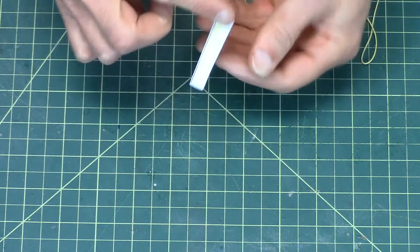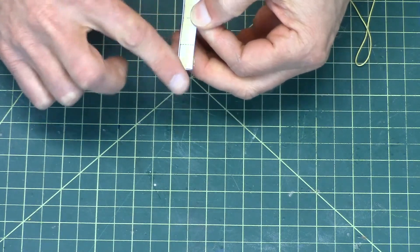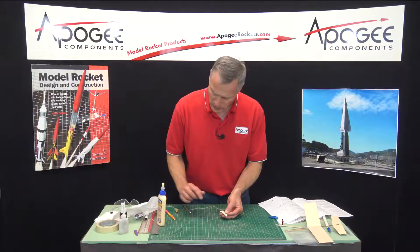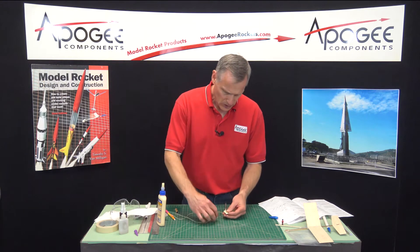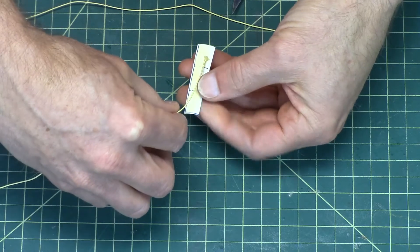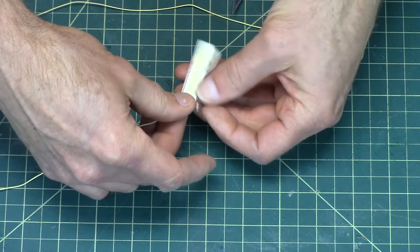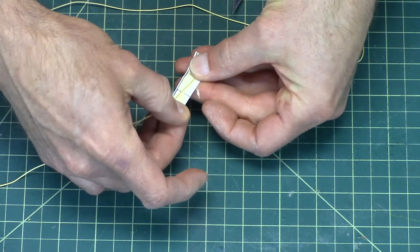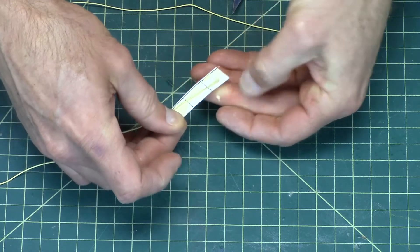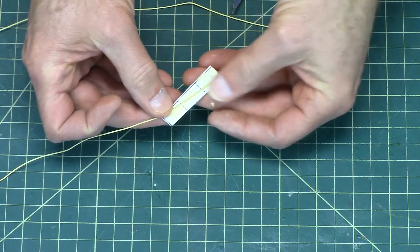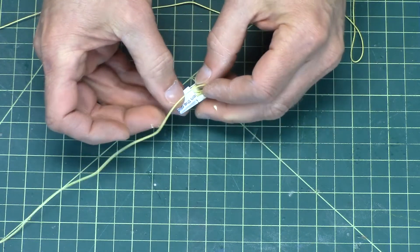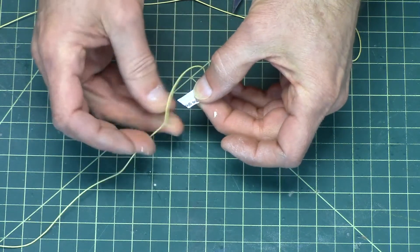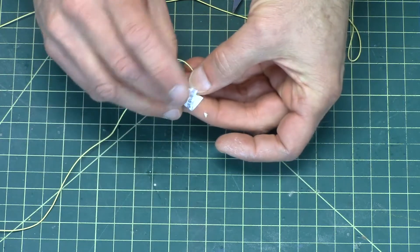Take the shock cord, lay it kind of at a diagonal. Kind of like that, and fold it over. And then fold it over one more time.